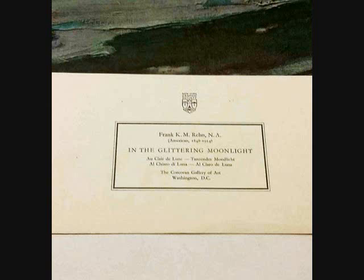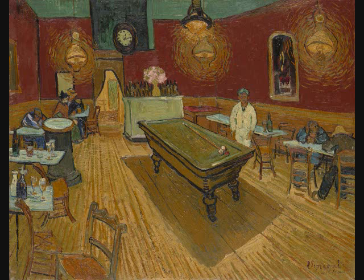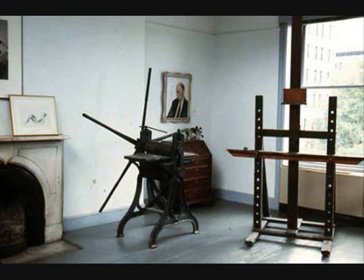Edward Hopper exhibited Nighthawks at the Frank K.M. Rain Gallery. Hopper mainly painted for his own personal pleasure and not for the money or awards. The title of Edward Hopper's painting is Nighthawks. Hopper's wife Josephine was the one who came up with the name for the painting. Hopper gained inspiration from Vincent van Gogh's Night Cafe to paint Nighthawks. Hopper painted Nighthawks in his studio apartment in New York.